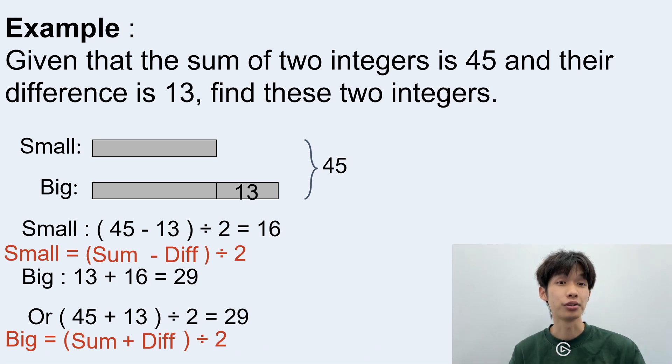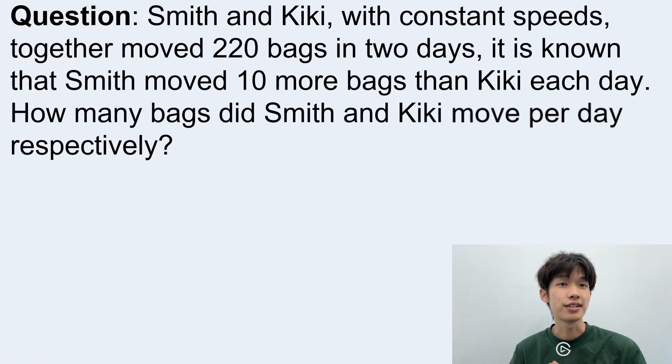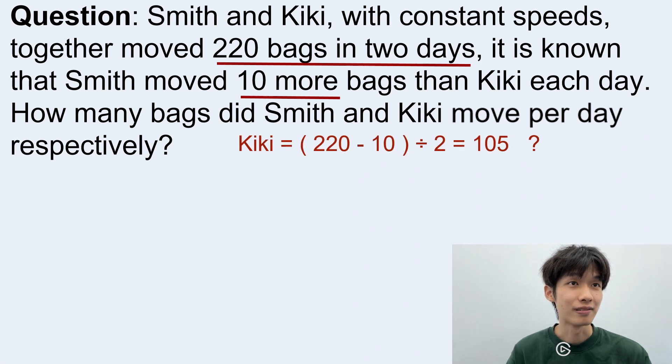Let's move on to the next question here. Smith and Kiki with constant speed together moved 220 bags in two days. It is known that Smith moved 10 more bags than Kiki each day. How many bags did Smith and Kiki move per day respectively? So here we know the total equals to 220 bags and the difference is 10 bags per day. So does it mean if we are trying to find Kiki's speed, which is the smallest speed, we can use the total and minus the 10 and give us Kiki's speed? The answer is no. And why? Because the 220 bags represent two days and the difference of 10 more represents one day. So these two numbers don't exactly mean the same thing.